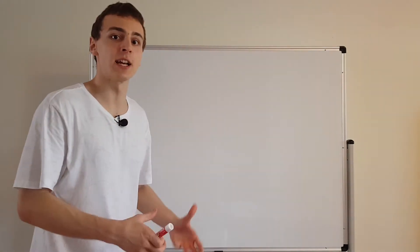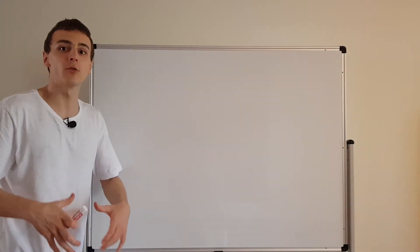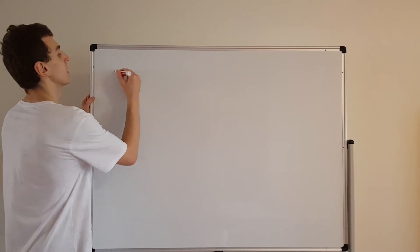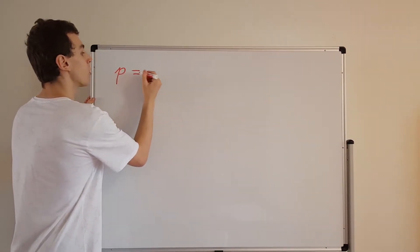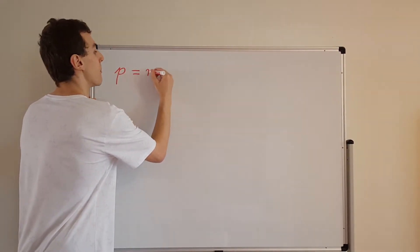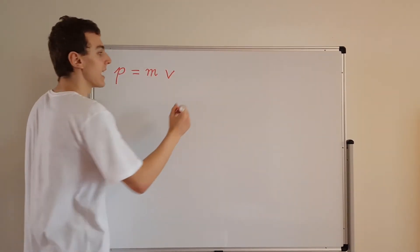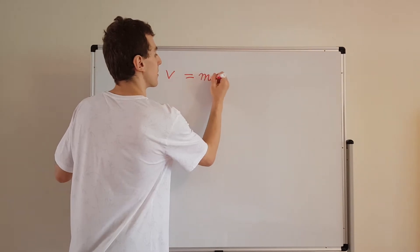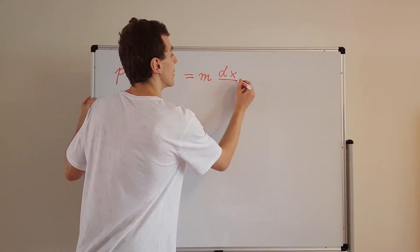Let's get started with the classical understanding of momentum. How would we think of momentum from a Newtonian perspective? We can think of momentum, denoted by the letter P, as being the product of mass and velocity. And we can think of velocity as being the time derivative of position. So that's going to give us this relationship over here.